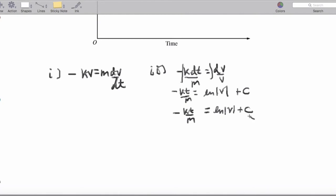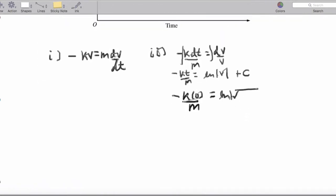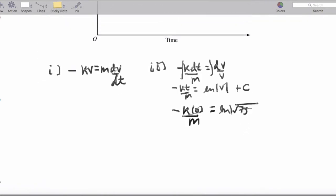So, for V, we're going to put in square root of 7gr over 2, yeah, so this is what I want to write. So, at time equals 0, we're going to put negative K times 0 over M equals the natural log of square root of 7gr over 2 plus C. And, that means C is equal to negative square root of 7gr over 2.